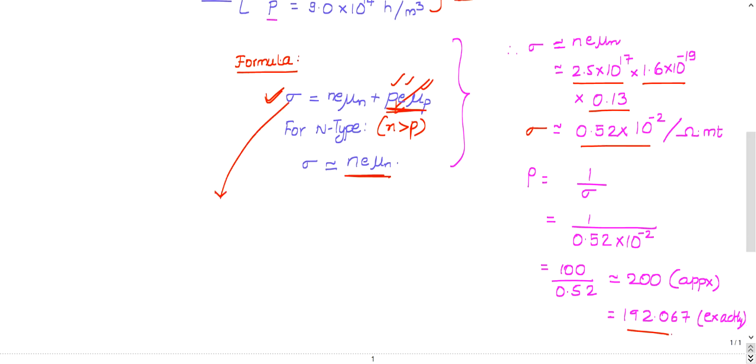If you use the complete formula without neglecting anything, you'll also get an answer as 192.067. There will be some change in the numbers after the decimal point, but it will be near 192.